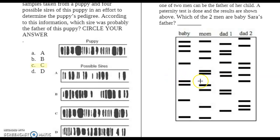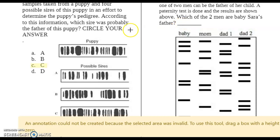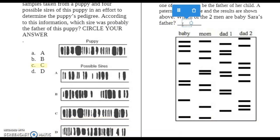This band did not come from mom, so it had to have come from dad. Okay, dad one does not have that one at all, or not even one really close. Dad two does have that band. So it appears that baby could have gotten that band from dad two. That one came from mom. This one did not come from mom, so it had to have come from dad. And yes, it is over here on dad two as well. So it appears that dad two would be the father. Dad two.